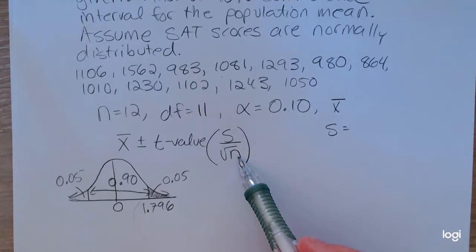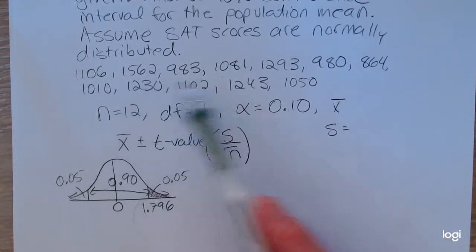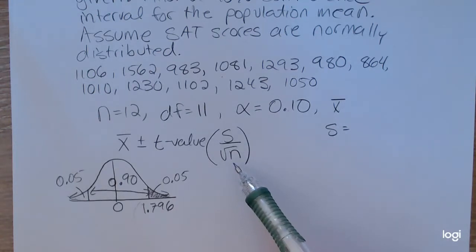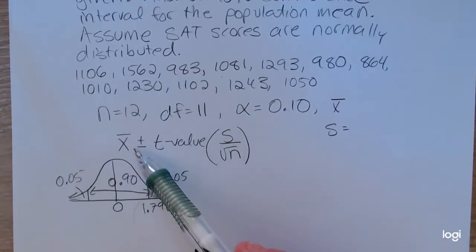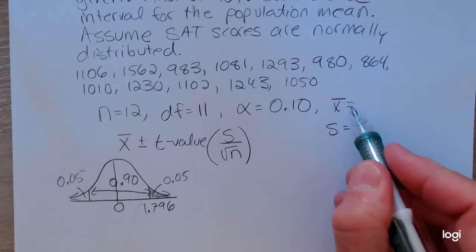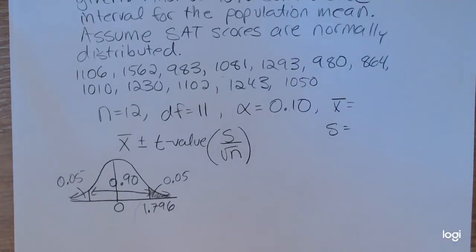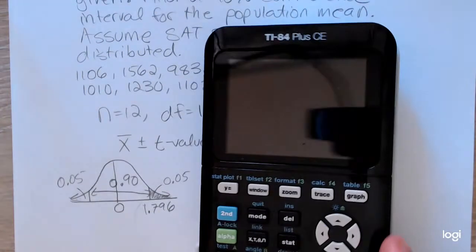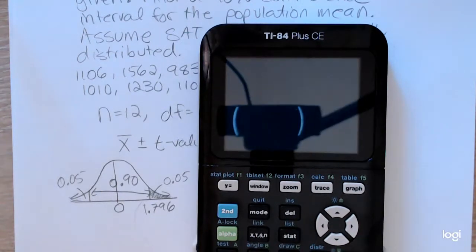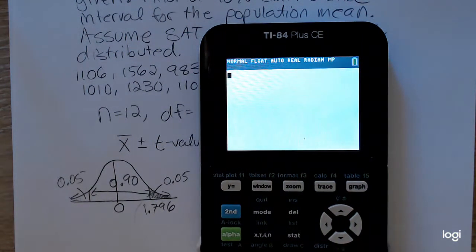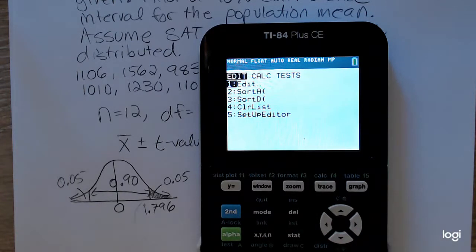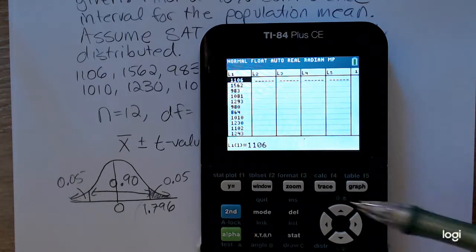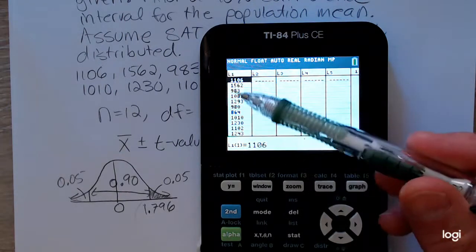And I have my sample size that's given in the problem. I could also count the number of values in my data set. So the only two missing pieces are the sample mean and the sample standard deviation. I've already entered the 12 values into my calculator under the stat menu. Just to reiterate, that would be stat and then edit.